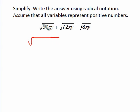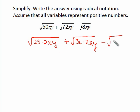Starting with 50, that's 25 times 2, and I still have my x and y. Then 72 has a perfect square factor of 36—that's 36 times 2, and I still have my x and y. And then 8 has a perfect square factor of 4, and I still have my 2 and my x and y.